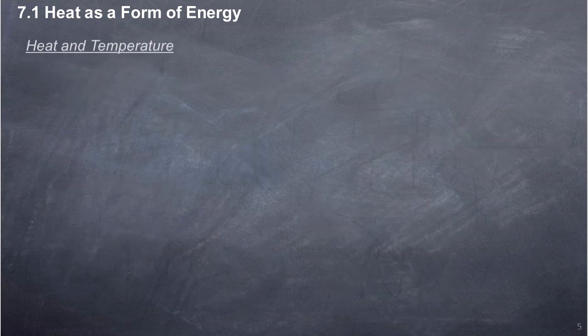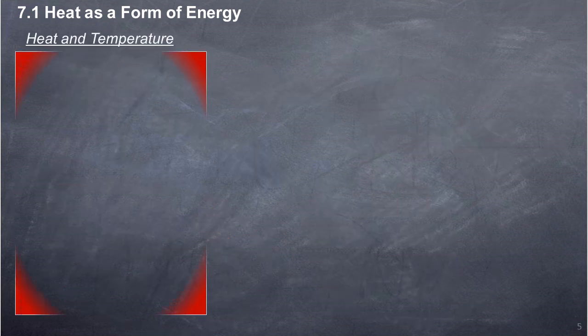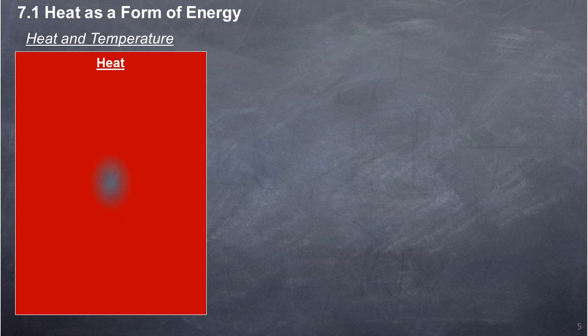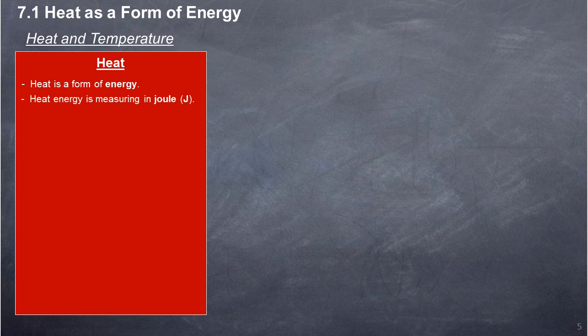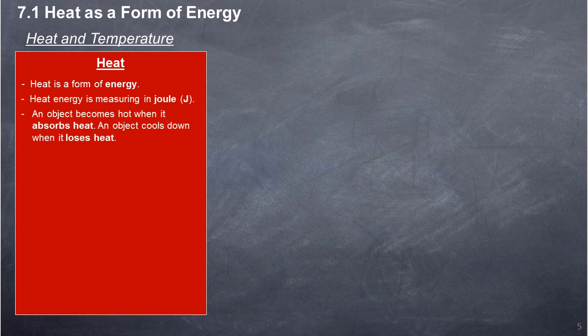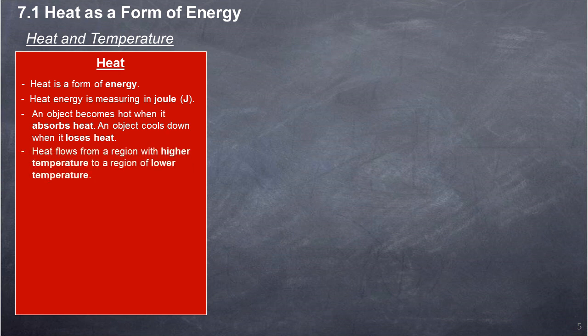Heat and temperature. Heat is a form of energy. Heat energy is measured in Joule (J). An object becomes hot when it absorbs heat. An object cools down when it loses heat. Heat flows from a region with higher temperature to a region of lower temperature.